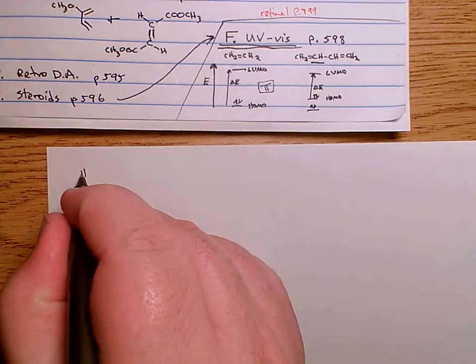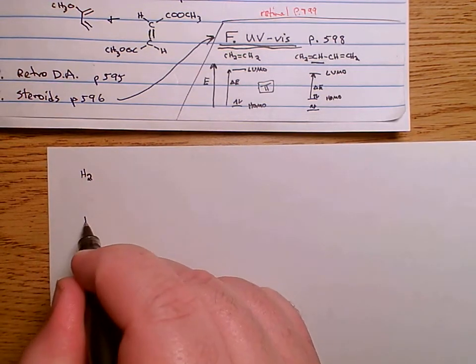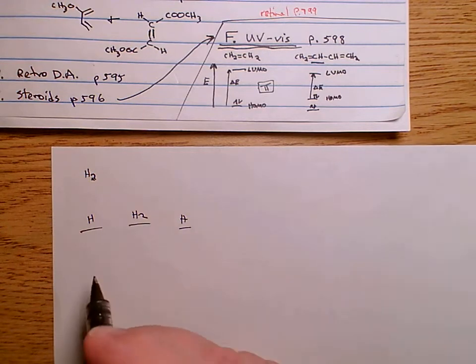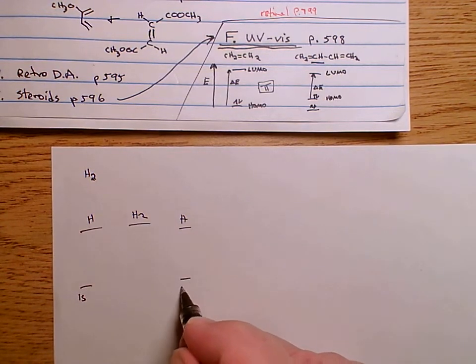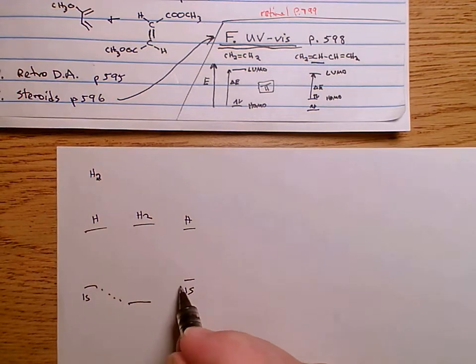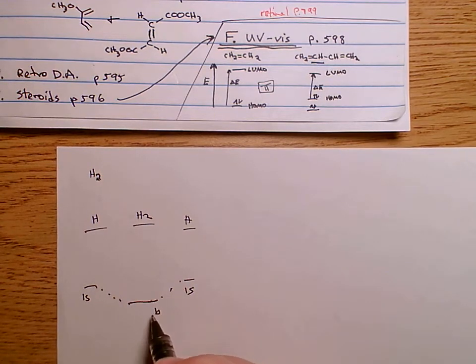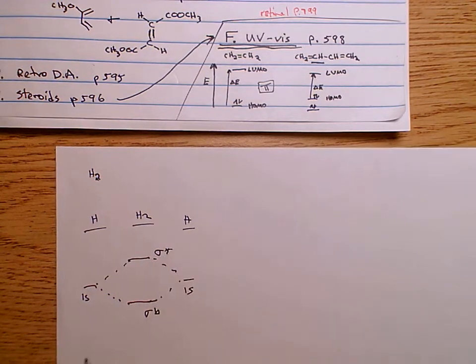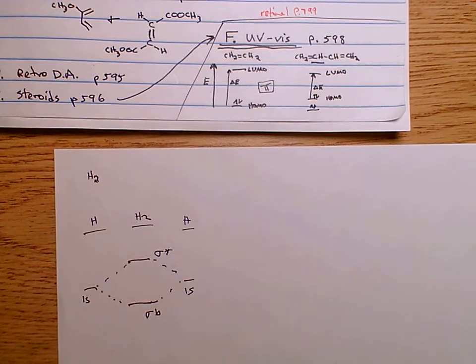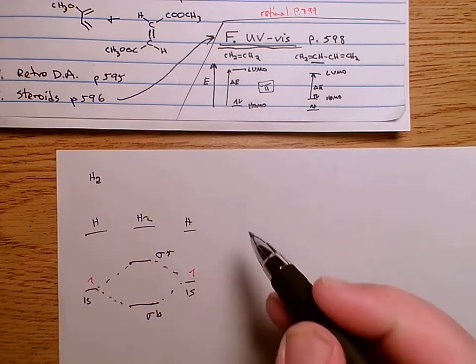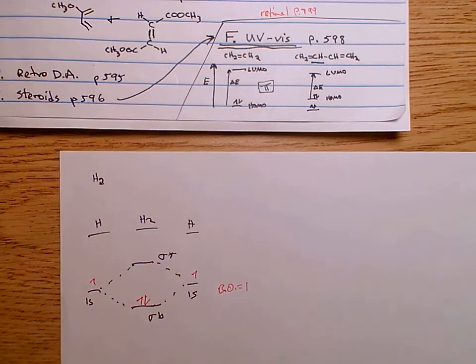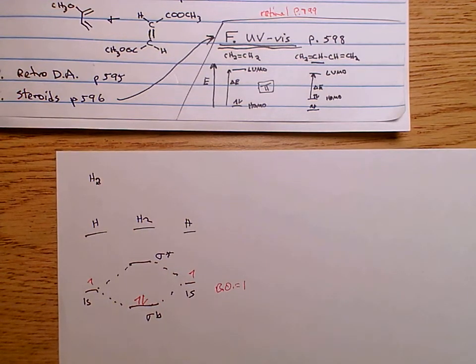When you had like H2, and so you'd put like, okay, H here, and H here, and H2 in the middle, and you had the 1s orbital here, and the 1s orbital here, and we said, okay, they form a bonding orbital here, a sigma bonding, and then we had a sigma star anti-bonding orbital, and each hydrogen has one electron, there's one electron here, one electron here, both electrons go down here, two electrons in bonding molecular orbital, the bond order equals one, remember all that good fun stuff from Gen Chem 1?